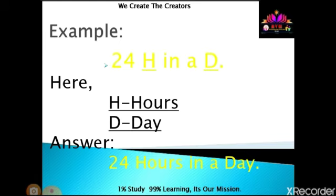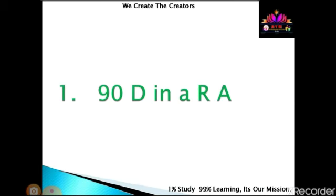See the first one. Here's an example: 24 H in a day. Here H denotes hours, D denotes day. The answer is 24 hours in a day. H is the abbreviation for hours, D is the abbreviation for day.